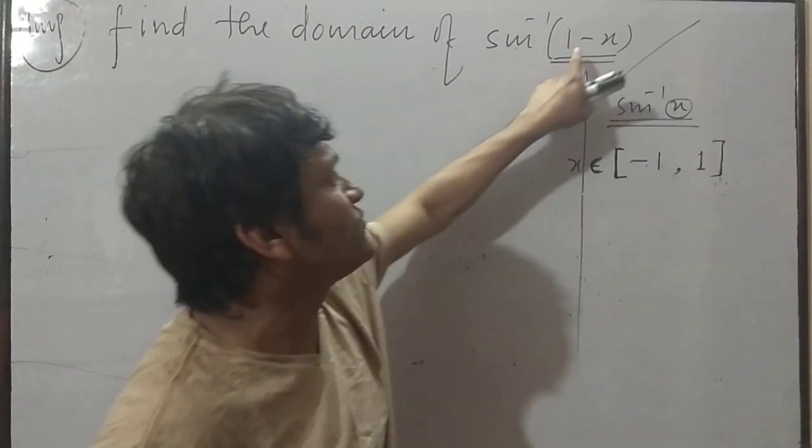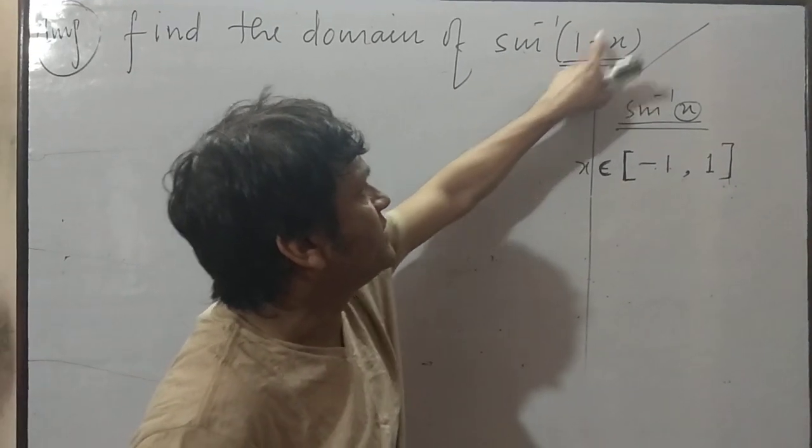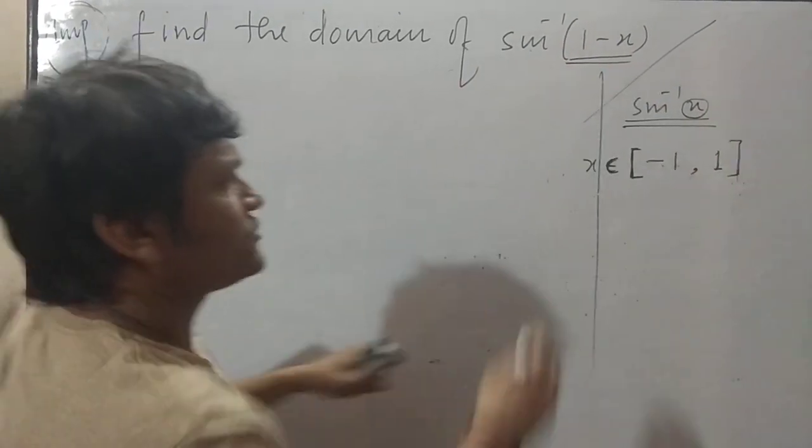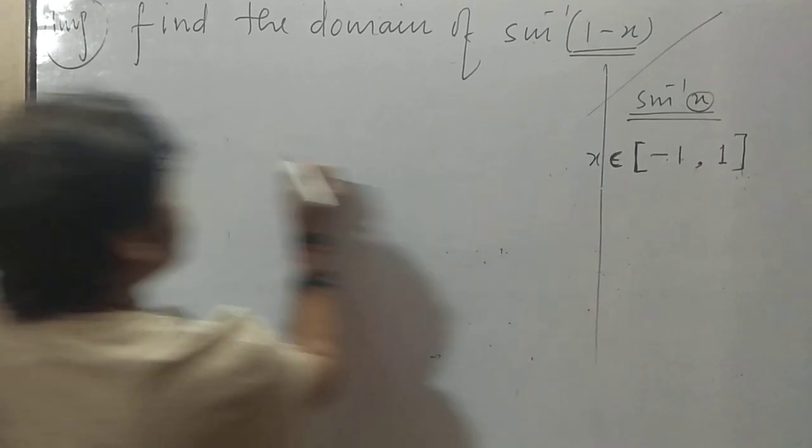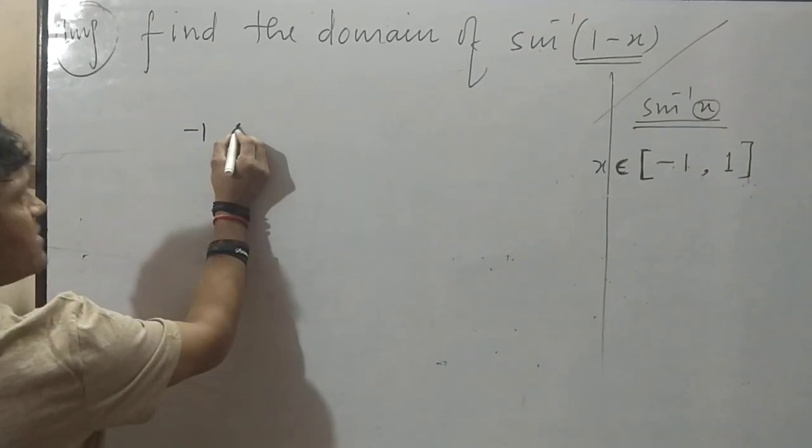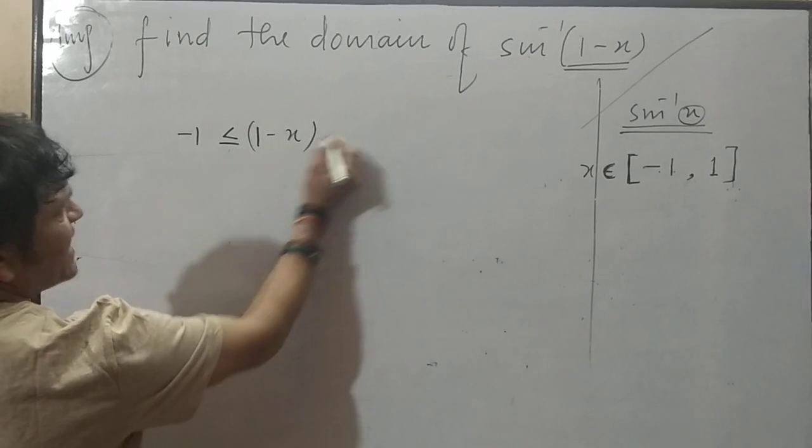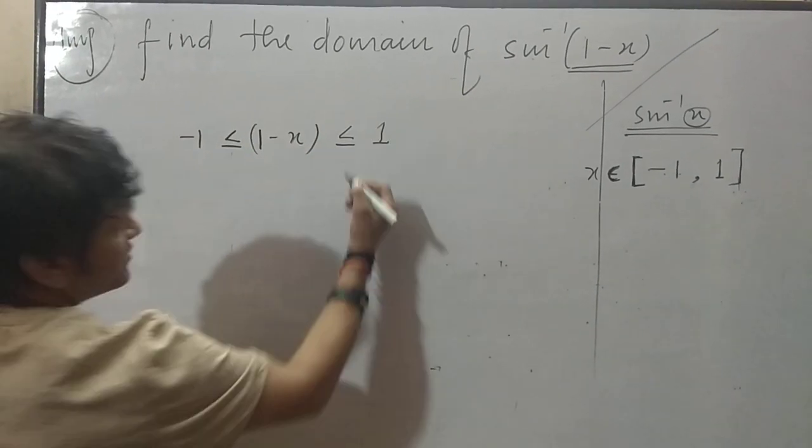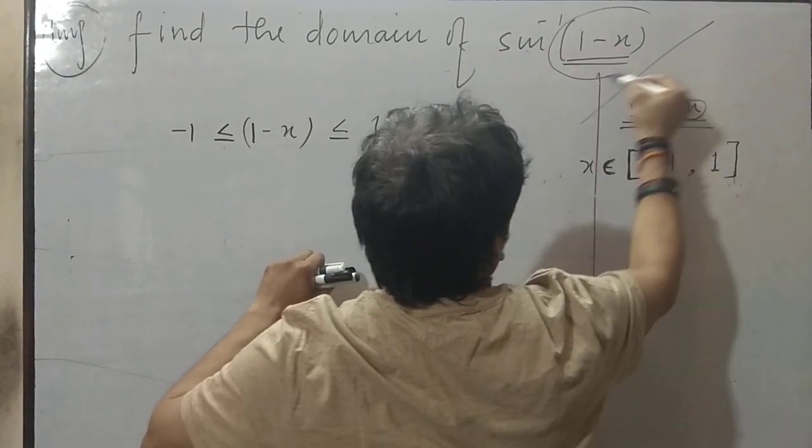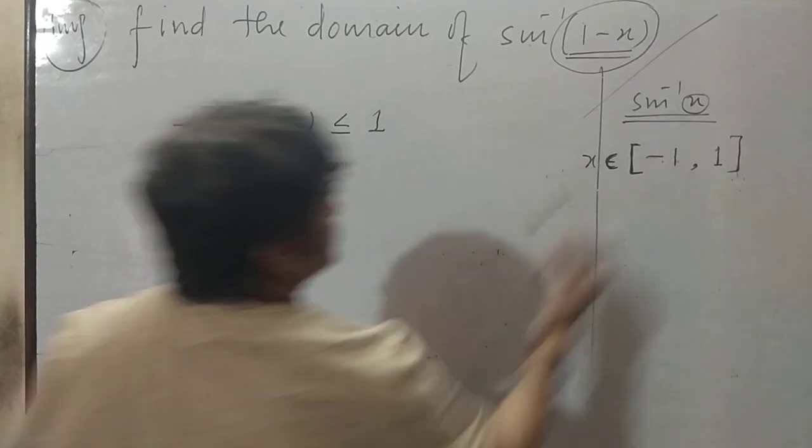Here is x. This will behave as x. So x belongs to minus 1 comma 1 to minus 1. Open bracket, 1 minus x, then 1. Means this x will lie between these two numbers.